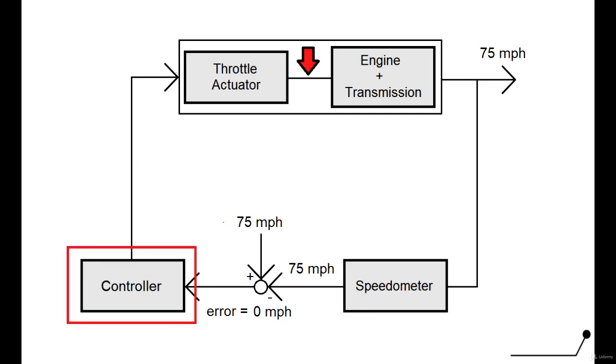So it's pretty apparent from this example that the controller's functionality is to essentially take our error signal and generate a control signal to drive our process. In doing so, our actual output should eventually reach our desired set point and thus the error should converge down to zero.